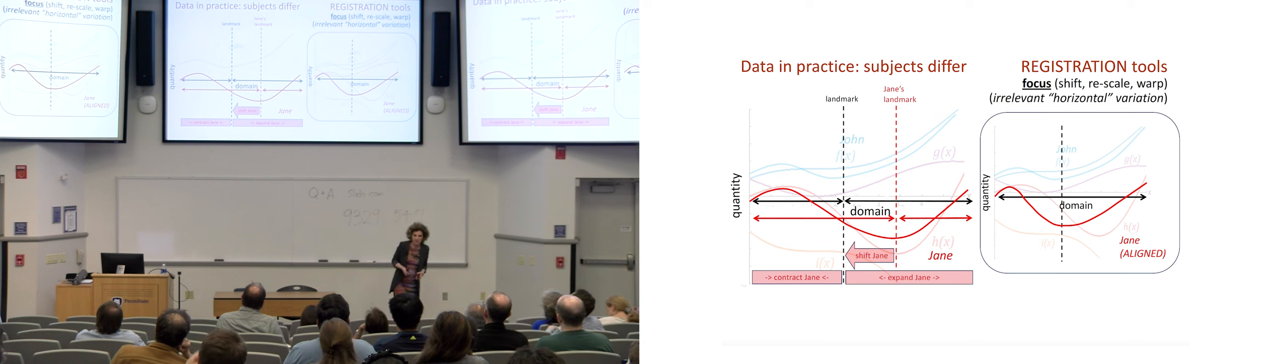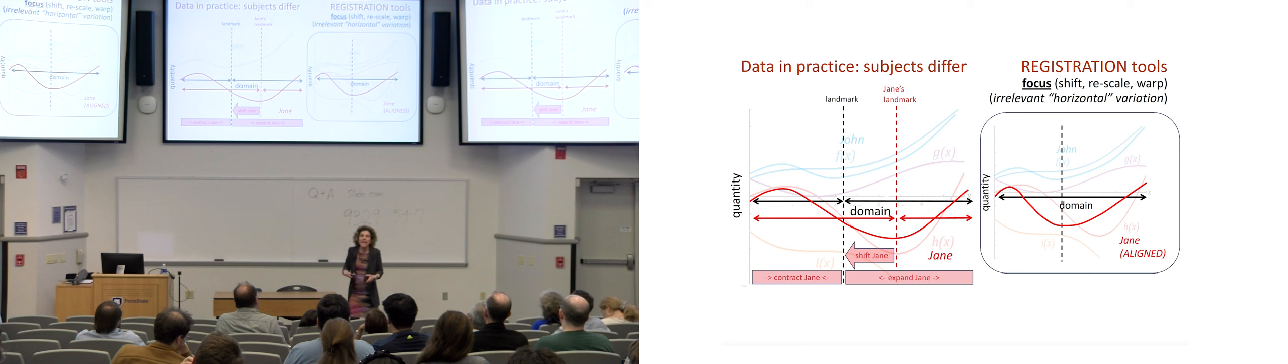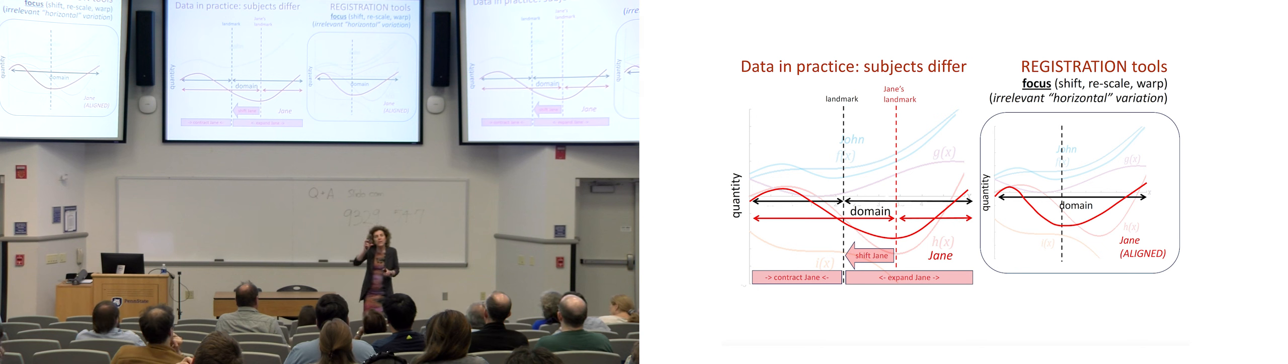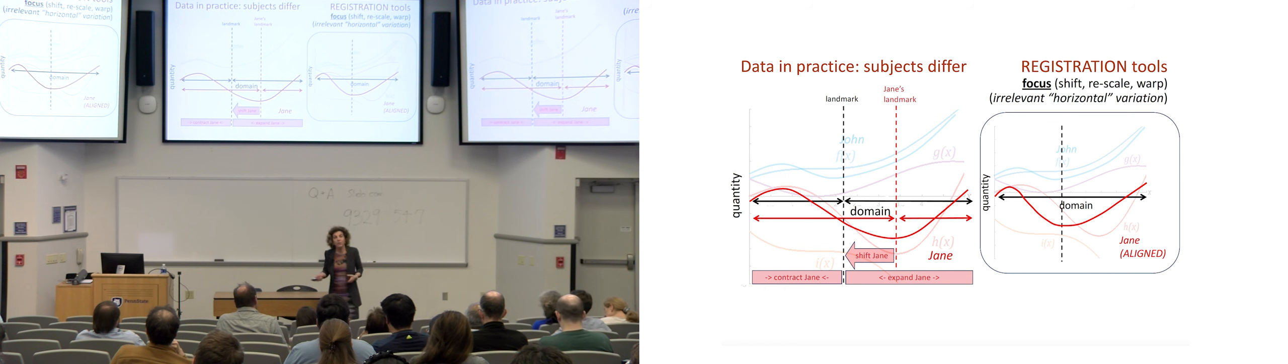So what we can do to ameliorate this problem is use another class of tools that belong to the registration bag, or alignment, sometimes people say. Essentially, we can manipulate these curves a little bit. We can shift them around. We can rescale them a bit. We can warp the way every curve unfolds along a person-specific domain in a way that makes persons more comparable to each other. This would be the idea. I think of it a little bit as if I were putting into focus before taking a photograph. We want to move things around a little bit in such a way that they come into better focus. And another way of thinking about this is that we are eliminating irrelevant horizontal variation this time. Smoothing tackles irrelevant vertical variation. Registration tackles irrelevant horizontal variation.